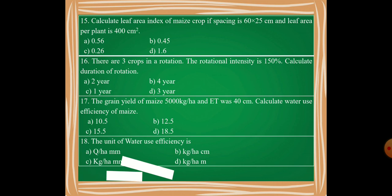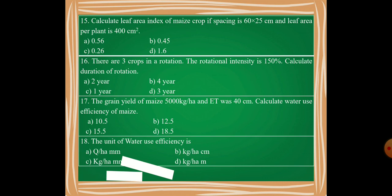Then moving on, 19th question: Bromelain, a digestive enzyme, is obtained from which of the fruits? Your options are papaya, pineapple, guava, and pomegranate. Your last question is: The unit of duty is cubic per hectare, meter square hectare per cubic, cubic per hectare, or cubic hectare meter cube?